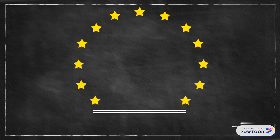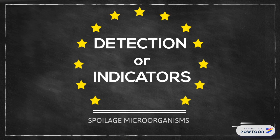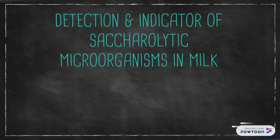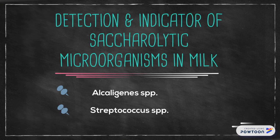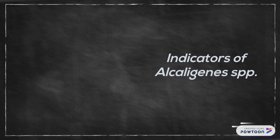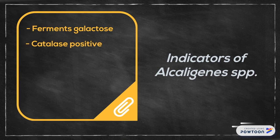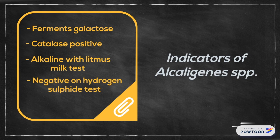There are some parameters or tests that can be taken to detect and identify the particular spoilage microorganisms in these food products. To detect the presence of saccharolytic microorganisms in spoilt milk such as Alkaligenes species and Streptococcus species, some indicators are studied. Indicators of Alkaligenes species are: does not ferment galactose, catalase positive, alkaline with litmus milk test, and H2S-negative on hydrogen sulfide test.